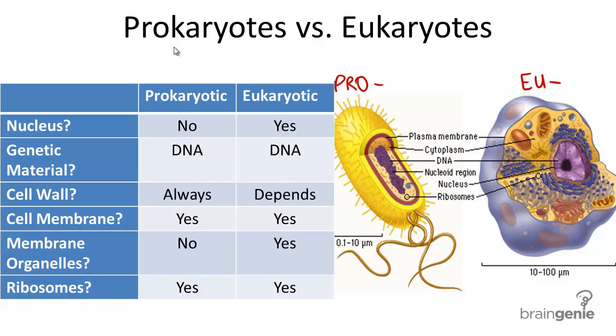Prokaryotes and eukaryotes. We can divide all cells into two major types. They are called prokaryotic cells and eukaryotic cells.